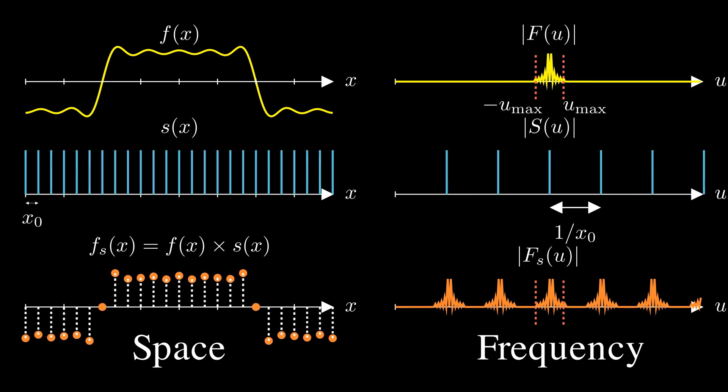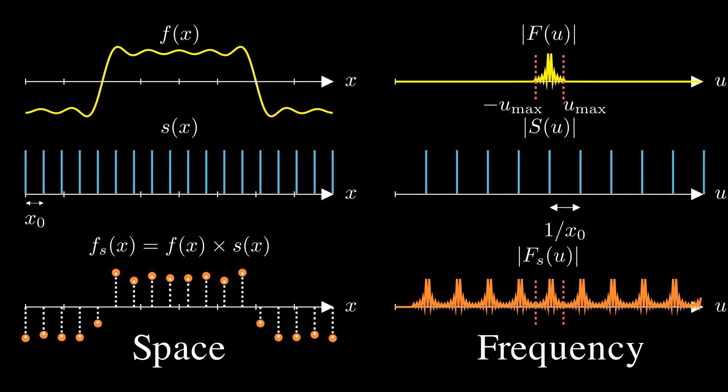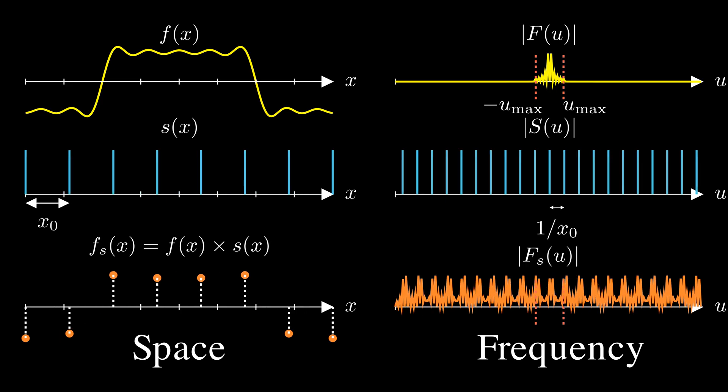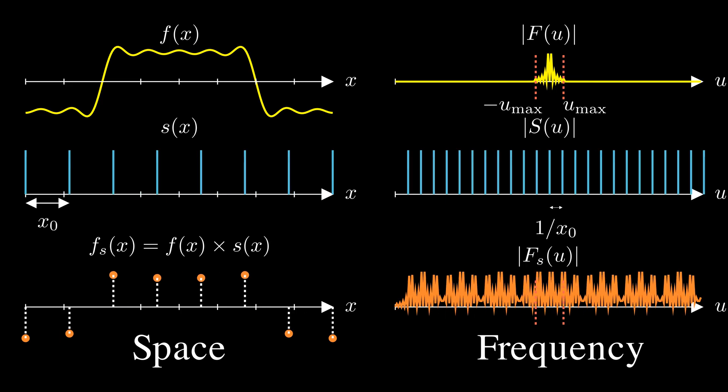But if we reduce the sampling rate, the frequency copies move closer together. And if we sample too slowly, they start overlapping. This interference distorts the original signal beyond recognition. This is called aliasing.